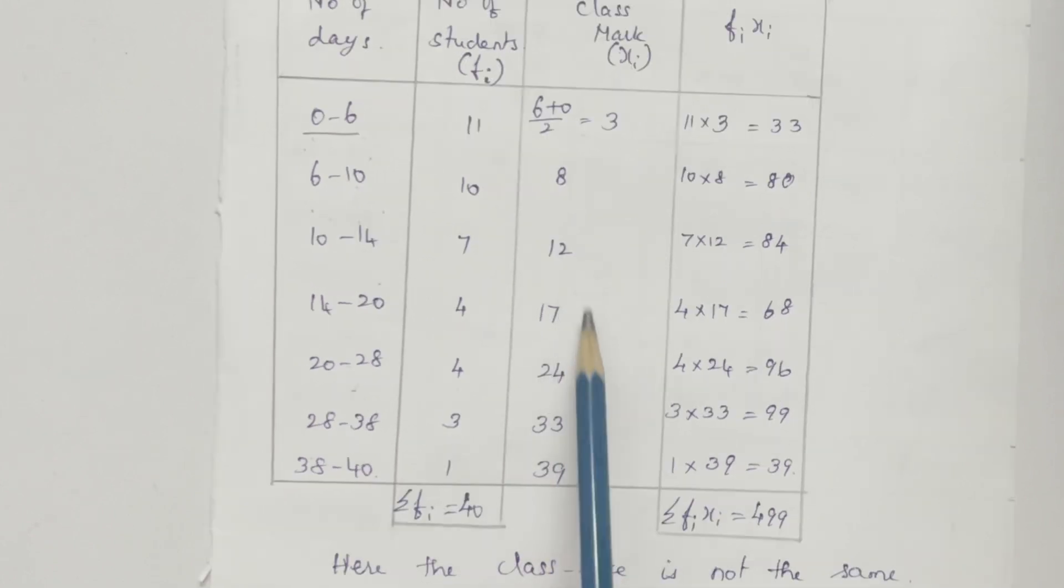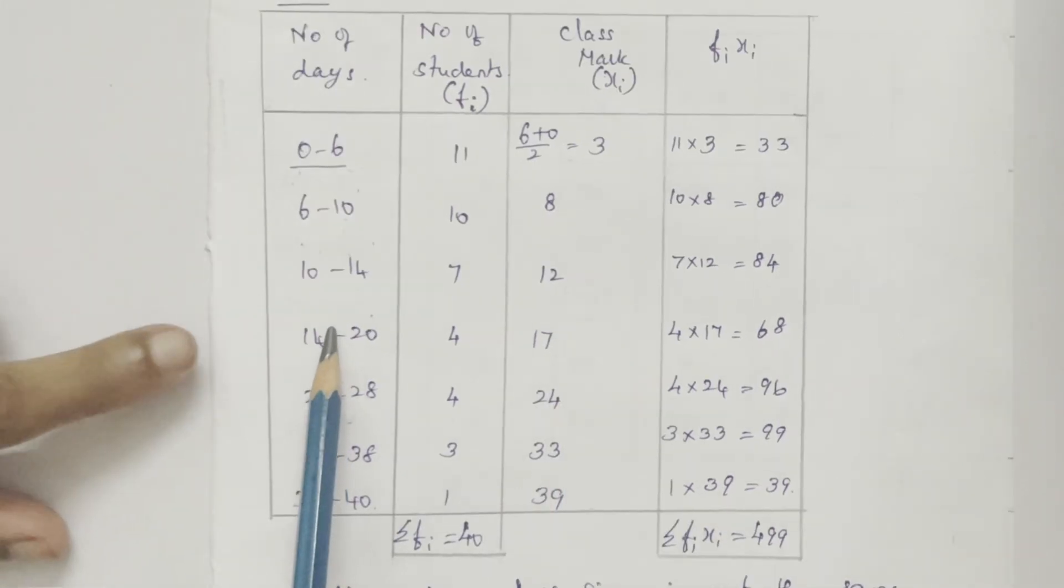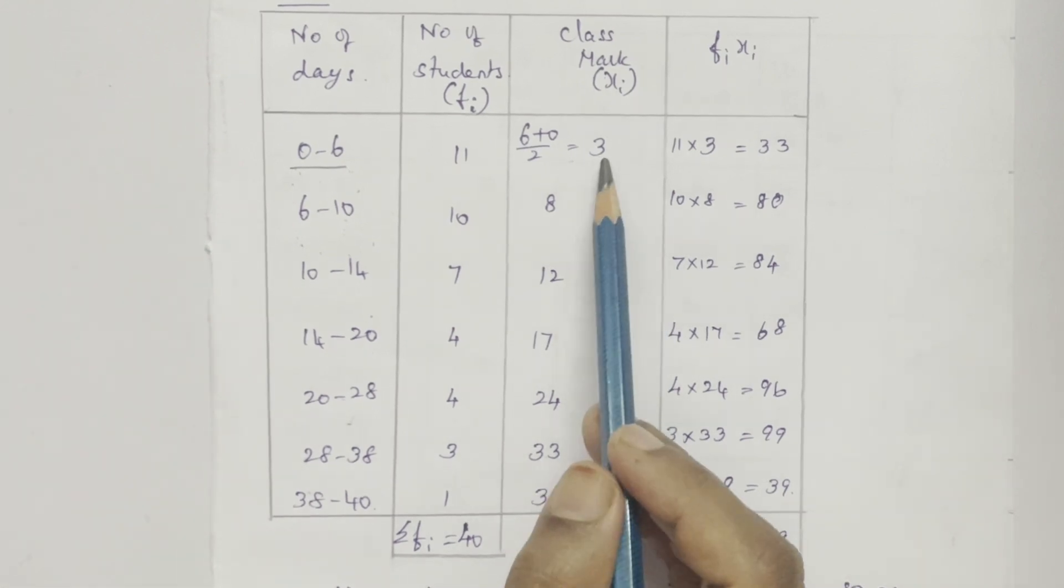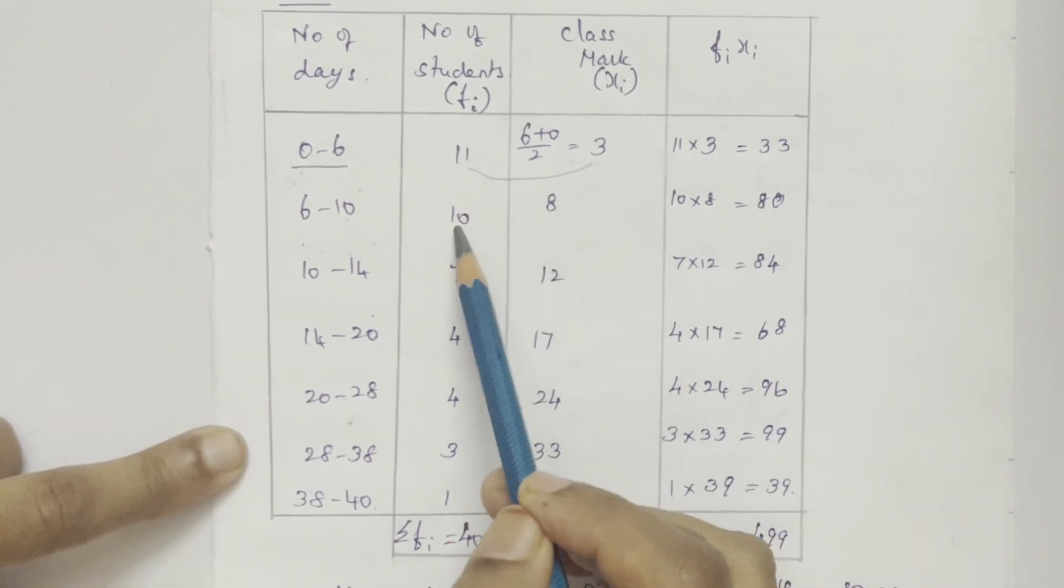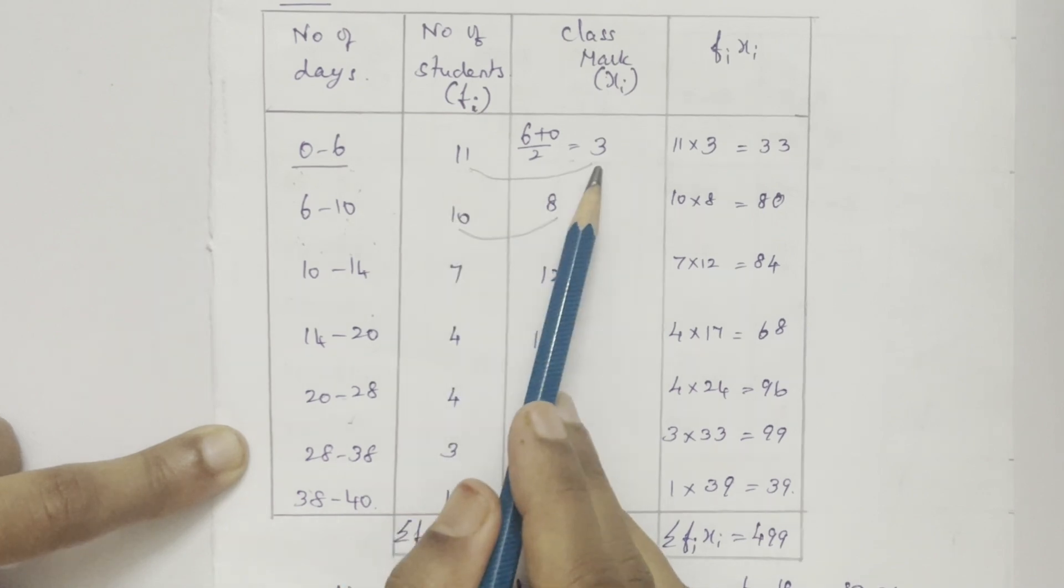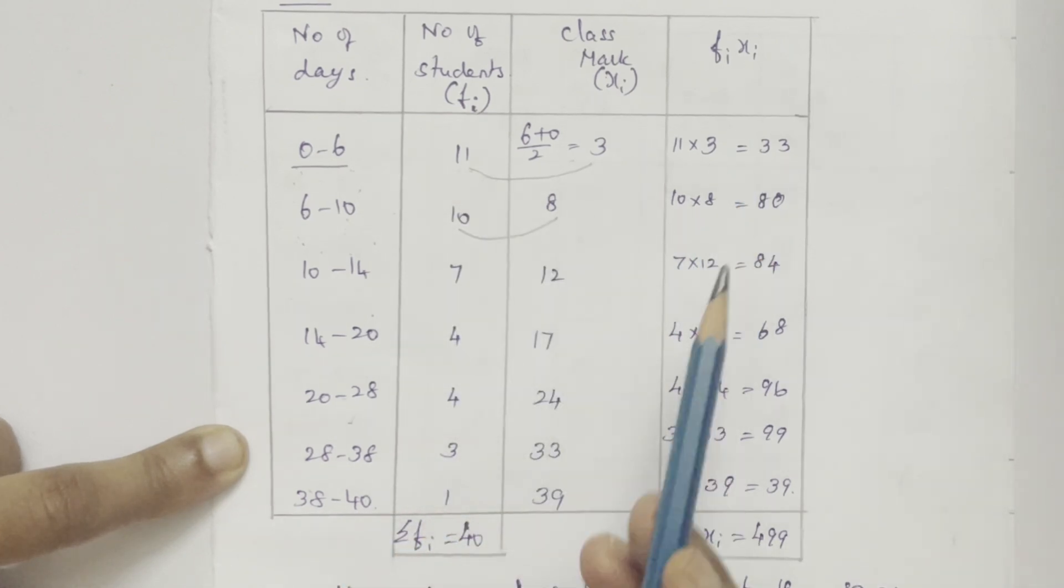See the class mark now. Already class size is different, and see the numbers in xi. We can multiply directly. It is easy. Only 11 into 3 is 33, 10 into 8 is 80, 7 into 12 is 84.